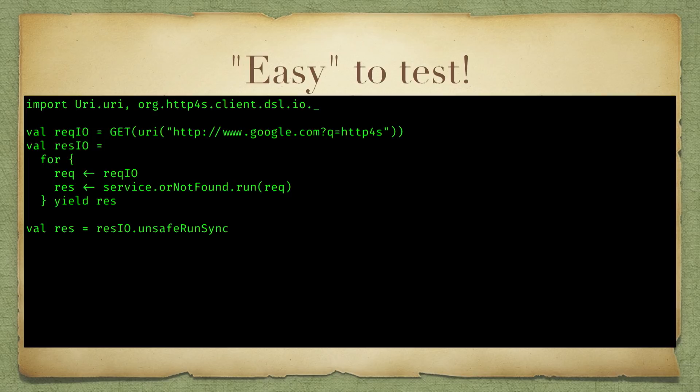We get a response back from our function. Because we're actually returning this response in an effect monad, we need to actually run the monad in order to get the result — which is a response that says 'not found'. Not very interesting, but it does underscore the fact that this is just a function and we can invoke the function with a little bit of syntactic overhead.